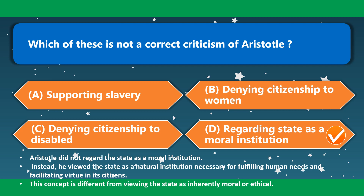Which of these is not a correct criticism of Aristotle? Supporting slavery — correct criticism. Denying citizenship to women — correct criticism. Denying citizenship to the disabled — correct criticism. Regarding state as a moral institution — not a correct criticism, because Aristotle did not regard the state as a moral institution; instead, he viewed it as a natural institution necessary for fulfilling human needs and facilitating virtue in its citizens.